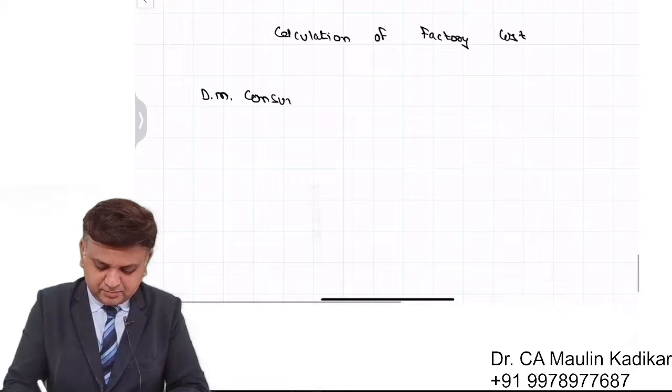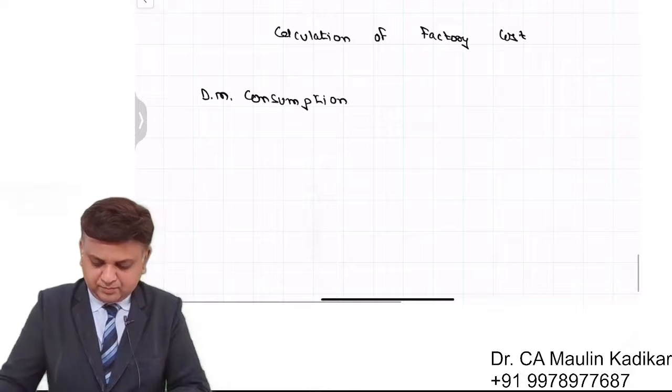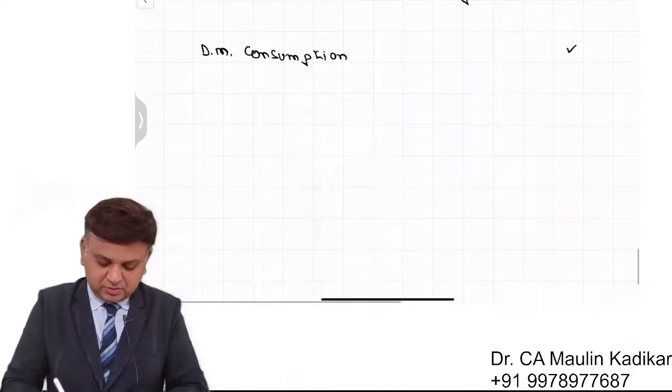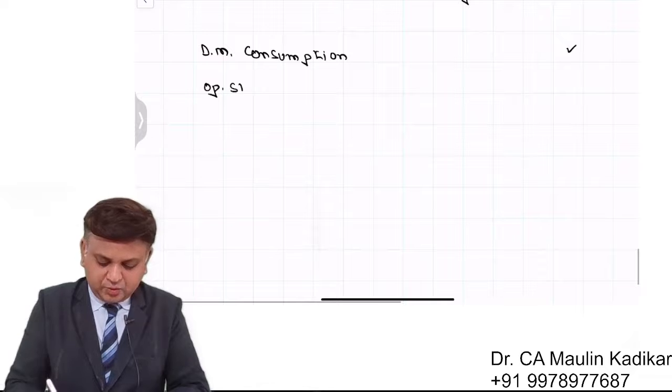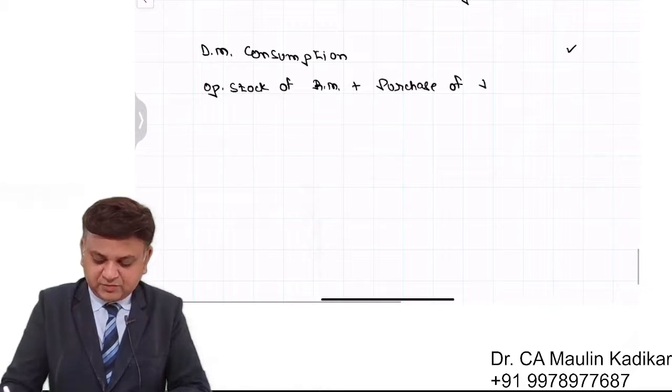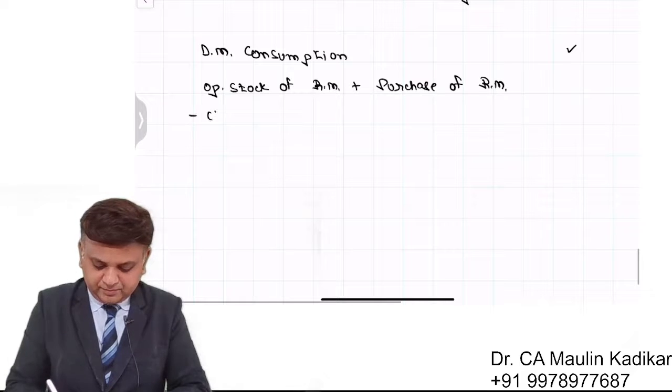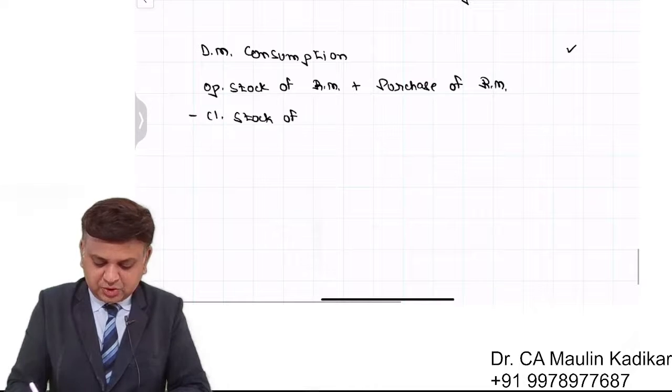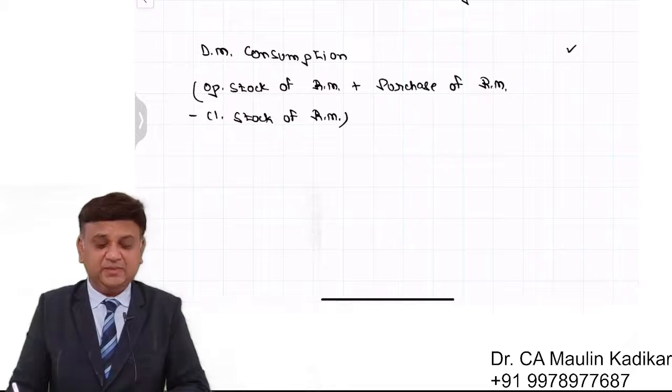It is opening stock of raw material, plus purchase of raw material, minus closing stock of raw material. That is direct material consumption.